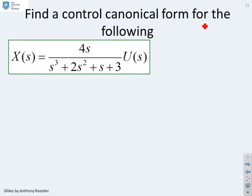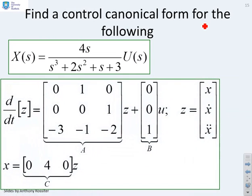So find a control canonical form for the following. So you'll notice I've got 4s over s cubed plus 2s squared plus s plus 3. So what I do, first of all, I define my a and b matrices. And you'll see in this bottom row, I've got the coefficient 3, the coefficient 1, and the coefficient 2, taken from that denominator. And I've got a 1 in the b matrix.